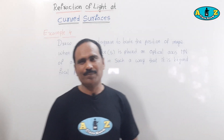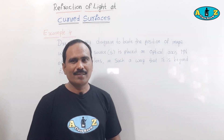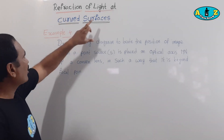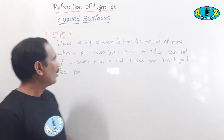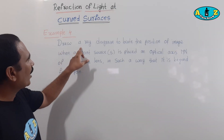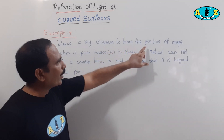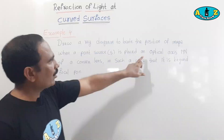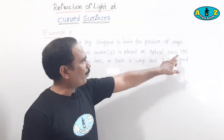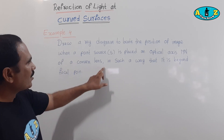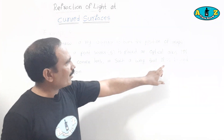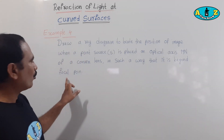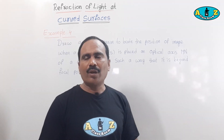Welcome to A to Z classroom. Today's class is Example 4, a problem in refraction of light at curved surfaces. Draw a ray diagram to locate the position of the image when a point source S is placed on the optical axis of a convex lens in such a way that it is beyond the focal point. We can understand this by drawing a ray diagram.